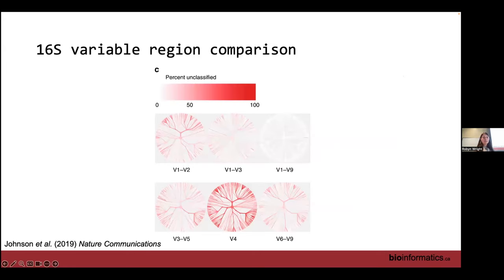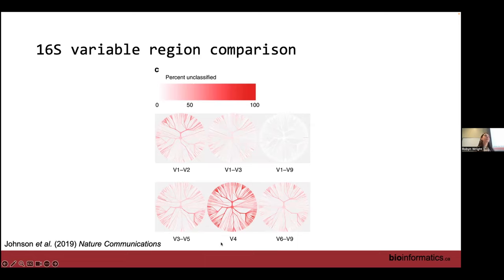Some of the most commonly targeted regions: V4 to V5 is seen as the universal marker gene region. On the right-hand side you can see roughly the percentages of different groups — archaea, bacteria, cyanobacteria, eukarya — that you'll be targeting. With universal primers you're also targeting quite a lot of eukaryotes, as well as mitochondrial and chloroplast DNA. Bacteria-specific primers target a different region and pick up very little of these other groups. This is something to bear in mind when designing your experiments.